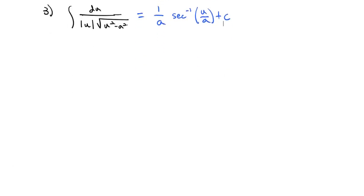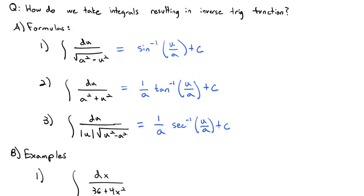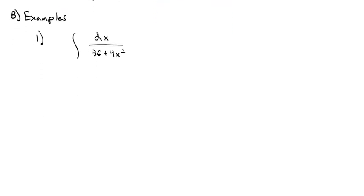Let's take a look at how we can use these three formulas to do some examples, starting with taking the integral dx over 36 plus 4x squared. Noticing in the denominator, we've got two perfect squares added together. That looks a lot like that second formula, the tangent formula. We just need to identify what a and u are, and that u hints at what we want to make our substitution.